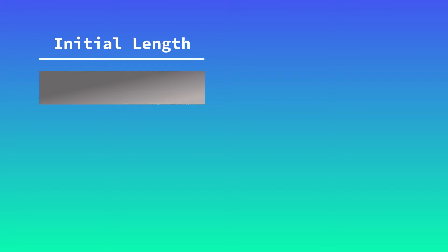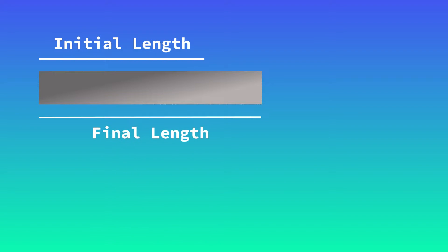Another important measurement we take in engineering is called strain. Let's have another example with a block of steel. This block of steel is going to start at an initial length, and after we apply a force to the material it's going to elongate to a final length.